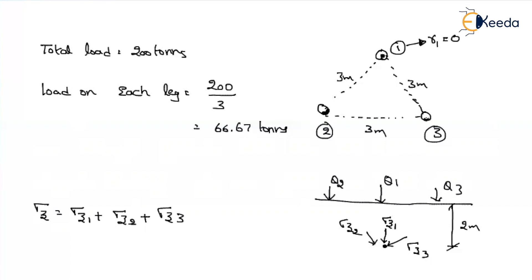What about the radial distance for leg 3 and leg 2? If you see from the top view, the radial distance is from the point where the load acts to where you are finding the stress. From the top view they look like a triangular shape. I am finding stress below leg 1 — load Q3 is here, so the radial distance between these two is 3 meters. Similarly, if load is acting at leg 2 and I am finding stress below leg 1, the radial distance is also 3 meters.